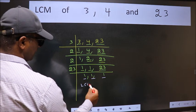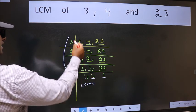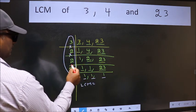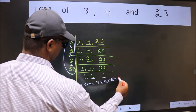So our LCM is the product of these numbers. That is 3 times 2 times 2 times 23.